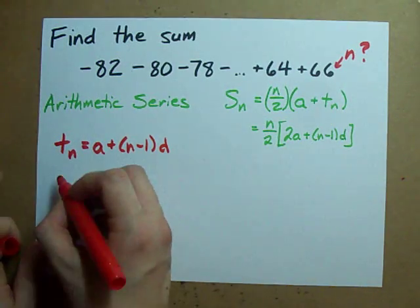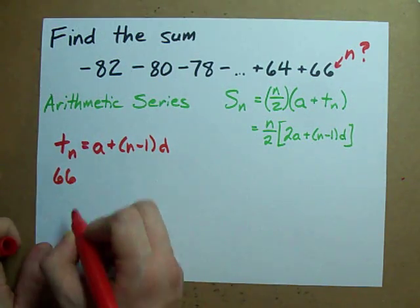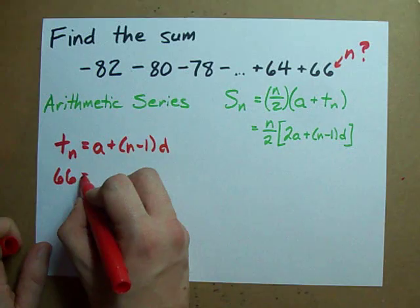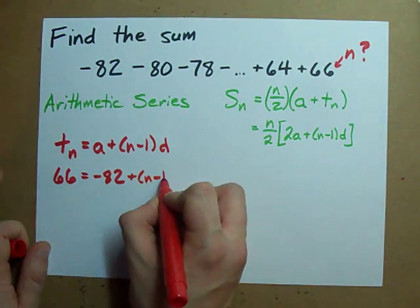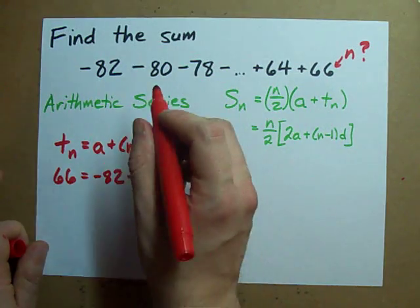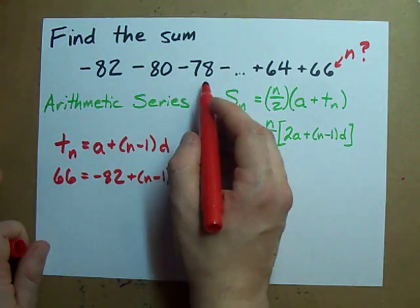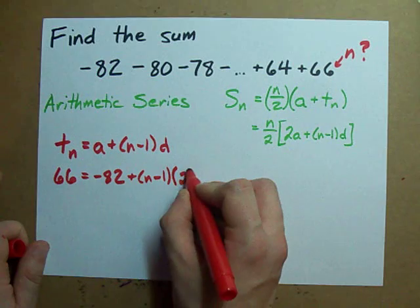We know that we're looking for n when t is 66. We know the first term is negative 82. We don't know n. And d, the amount it's going up by each time, the common difference, is 2.